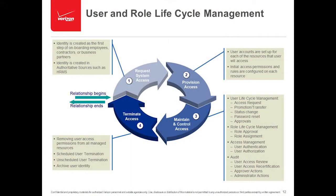You have the provisioning of the access, going back to mirroring users; then the maintenance and controlling of the access — how often are we actually auditing to see if, based on Joe's role, he should still have all this access? We want to compartmentalize things because what happens if Joe's credentials get lifted, or Joe is extorted or blackmailed? If we limit what Joe has access to based on his need to know, we can at least ensure that if someone gets his privileges and credentials, we've also contained what they can do with it.